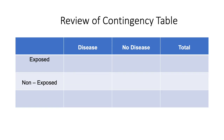The contingency table has four categories based on both the exposure and disease status, along with the respective total columns. Examples of exposures include smoking, contaminated food, roaches, and air pollution from highways. Examples of diseases include HIV/AIDS, type 2 diabetes, asthma, and chronic obstructive pulmonary disorder.